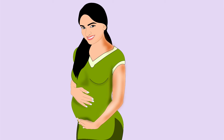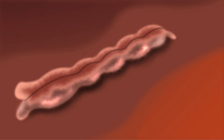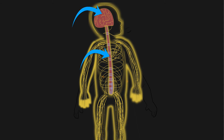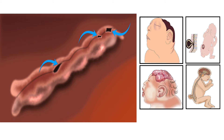Folate is also required for a healthy pregnancy and closure of the neural tube. The neural tube develops into the brain and spinal cord of the baby. Failure in closure of neural tubes may result in neural tube defects, which are birth defects of the brain and spinal cord.